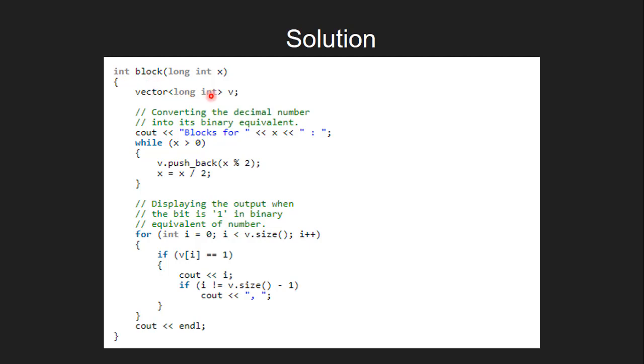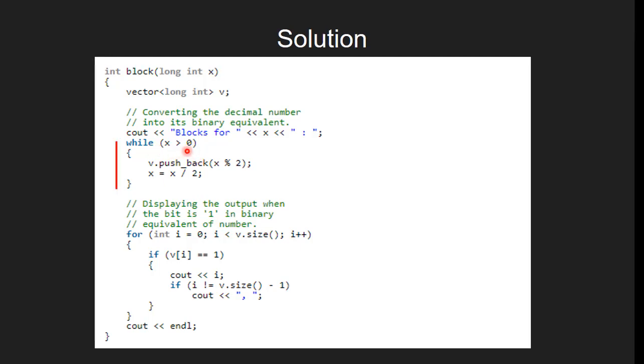Inside the block function, we create a vector variable v to store the binary form of the current number x. We run a while loop to find the binary form of x. In each iteration, we find x modulo 2 and push it into the vector. Next, we update x by dividing it with 2.